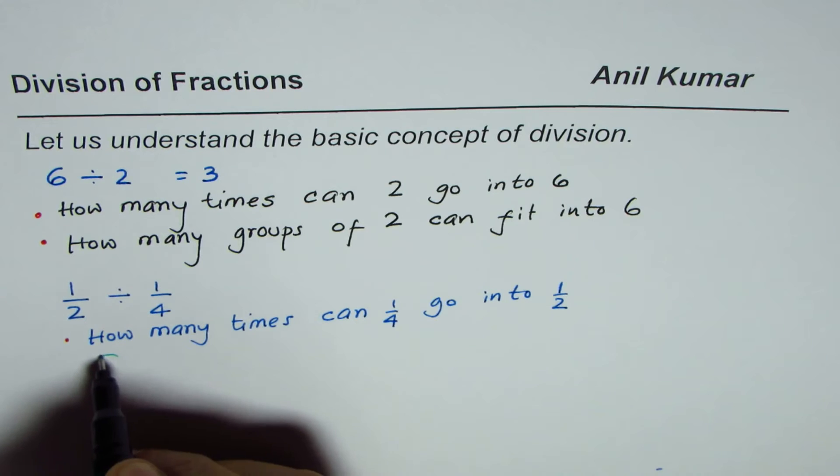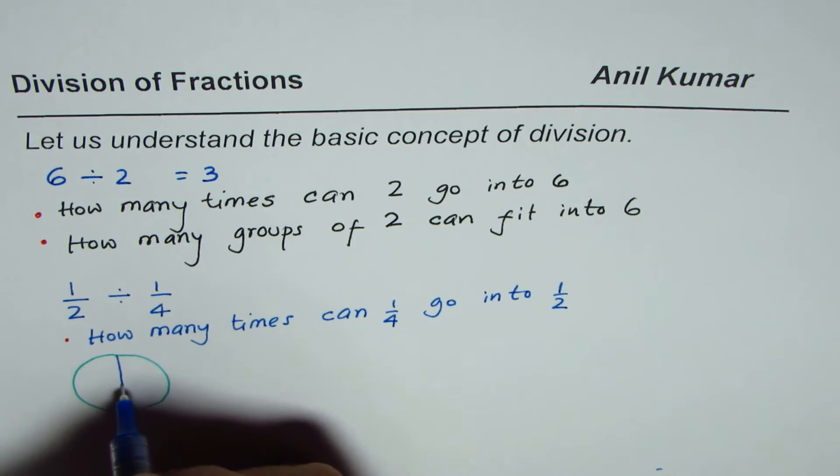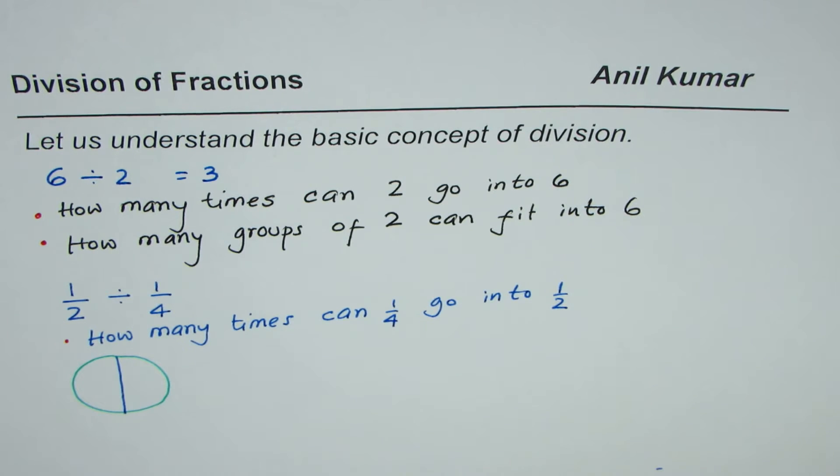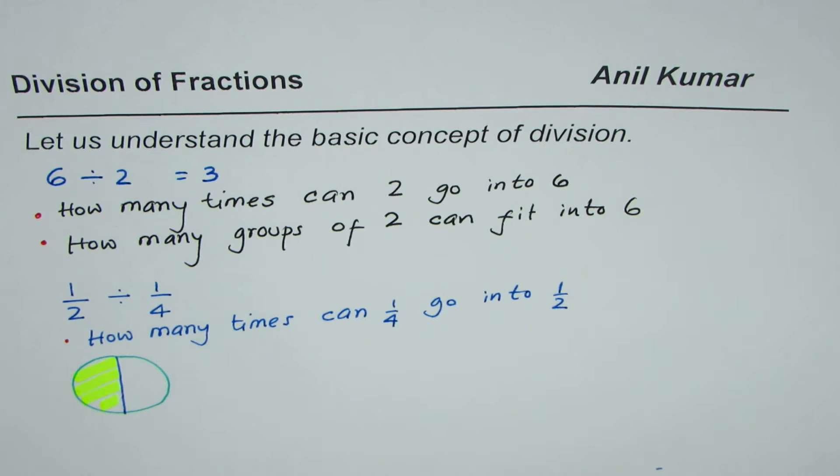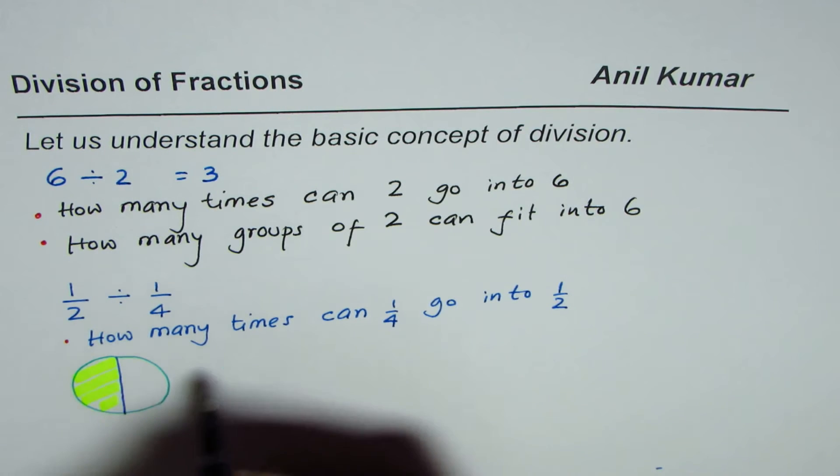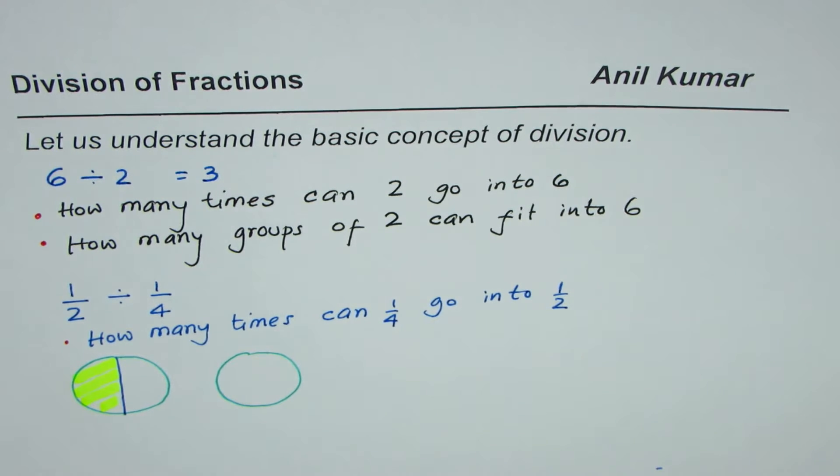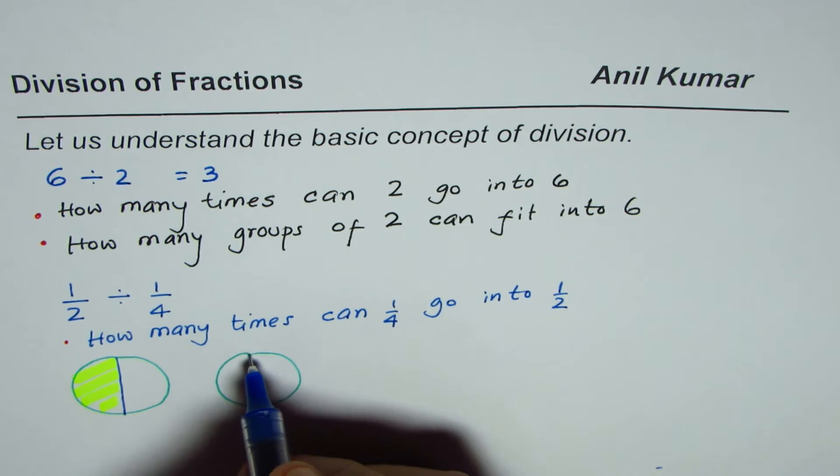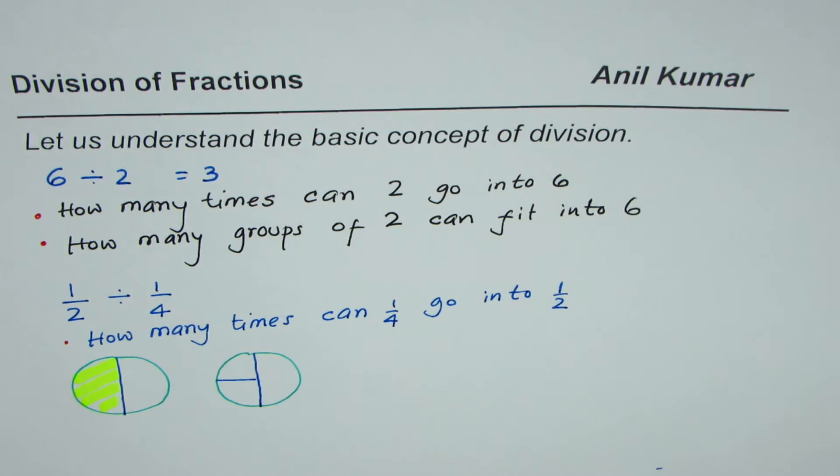Let us say we have half of a pizza. So, let me shade this in one color. So, let us say that we have this half of pizza, and we want to share it, 1 fourth of it to different people. So, how many people can have 1 fourth of it? 1 fourth of it will be kind of this much. So, let me shade 1 fourth of it in a different color.